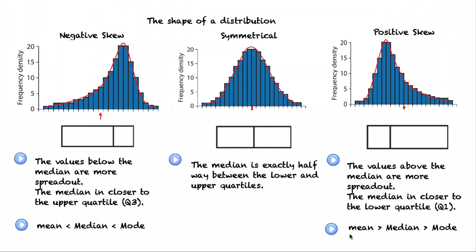Here, I have the mean, the median and the mode again in alphabetical order. I notice if the mean is greater than the median, I have a positive skew. And again, we see as if that inequality sign is pointing to the positive direction, to help me remember. For a symmetrical distribution, the mean will equal the median.